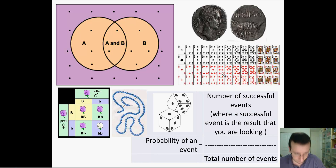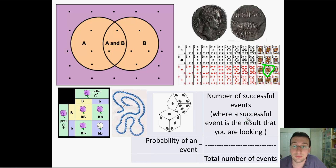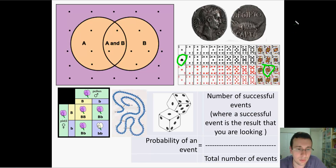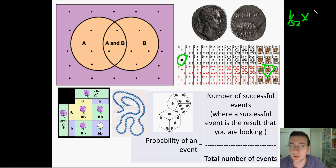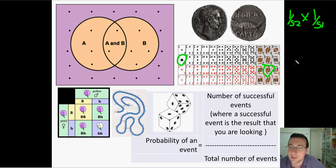Now a trickier one. What are the chances of drawing a queen of hearts first, not putting her back, and then drawing the ace of spades? The chance of drawing the queen of hearts is one out of 52. The second event is unrelated to the first, but here's the trick: you no longer have 52 cards — you only have 51. So the chances are one out of 52 times one out of 51.